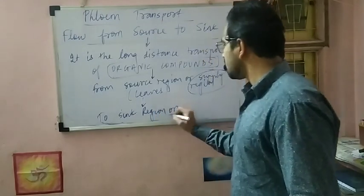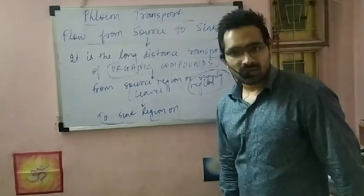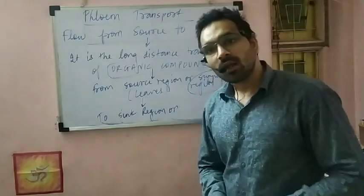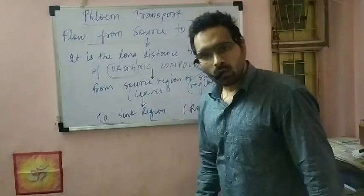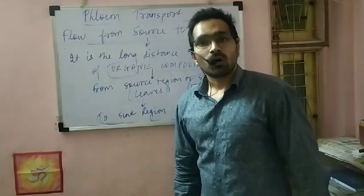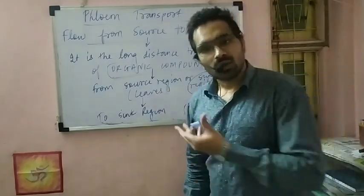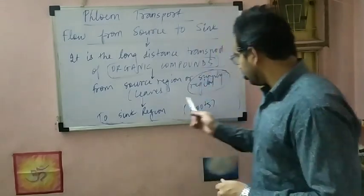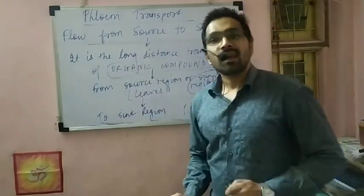The source region's job is to supply to the sink region. For sink region we can say it is the region of utilization or region of storage — the other region where organic compounds are either stored or utilized. Usually that region is the roots. So we will study the long distance transport of organic compounds through phloem from source (usually leaves, where photosynthesis occurs) to sink (usually roots).